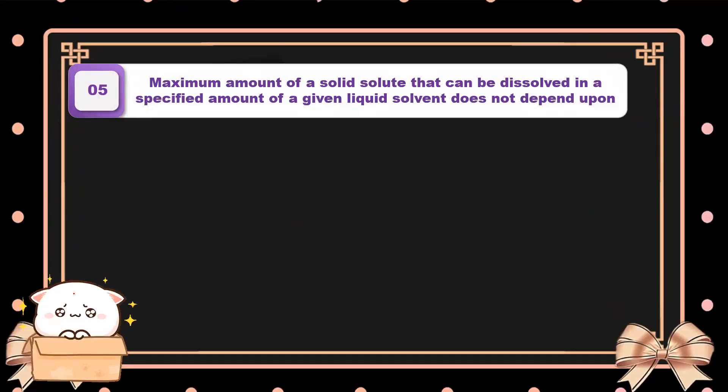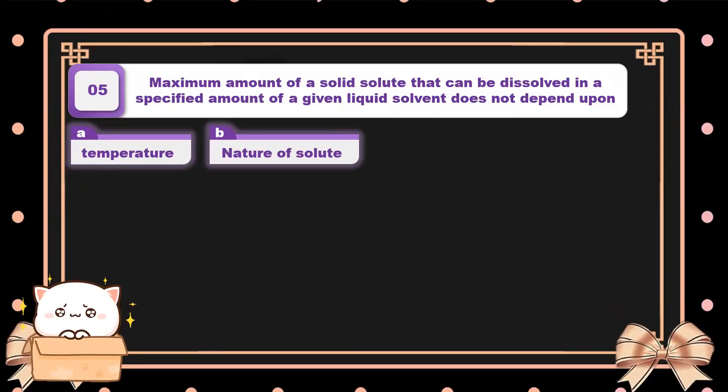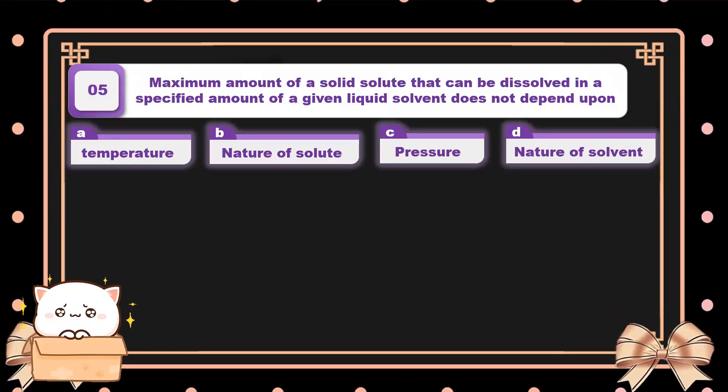Question number five: the maximum amount of a solid solute that can be dissolved in a specific amount of a given solvent does not depend upon pressure. Pressure cannot affect solids and liquids because they are incompressible — they remain the same after pressure is applied. Option C is the correct answer.